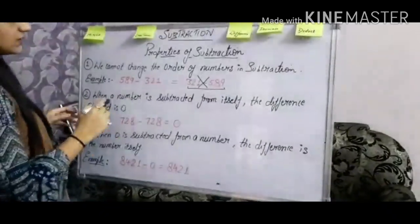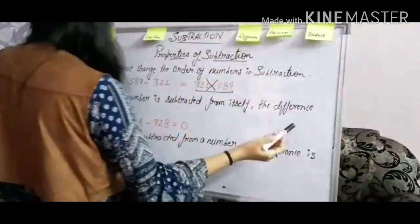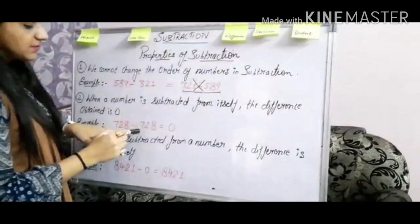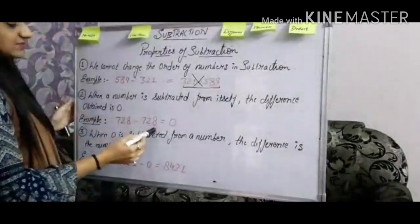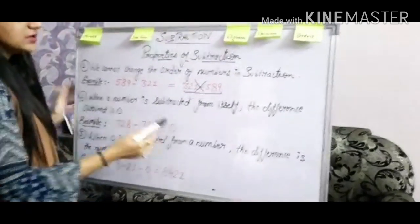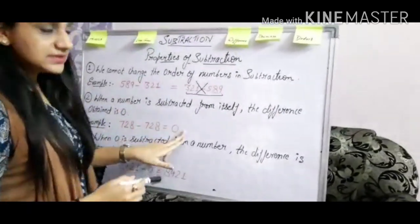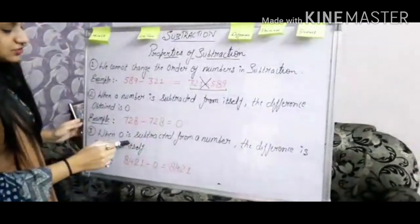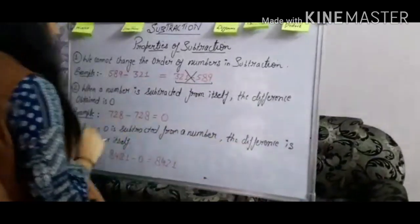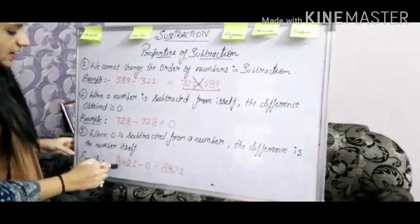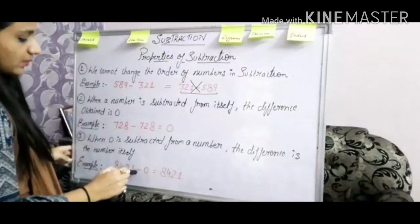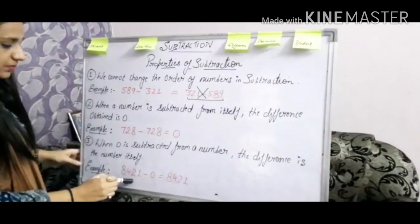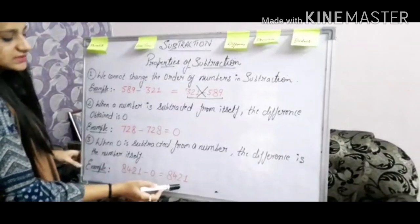The second property says that when a number is subtracted from itself, the difference obtained is 0. For example, 728 minus 728 always gives 0. The third property says that when 0 is subtracted from a number, the difference is the number itself. For example, 8421 minus 0 — when subtracting 0 from any number, the difference is always the number itself.